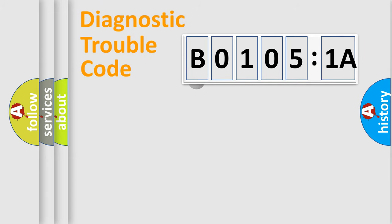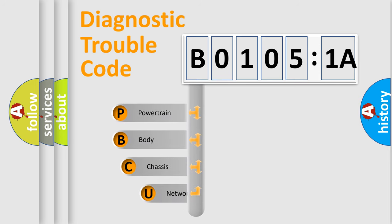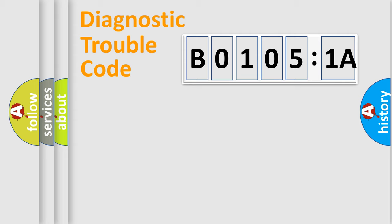First, let's look at the history of diagnostic fault code composition according to the OBD2 protocol, which is unified for all automakers since 2000. We divide the electric system of automobile into four basic units: powertrain, body, chassis, and network.